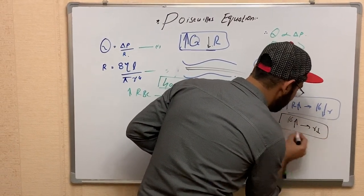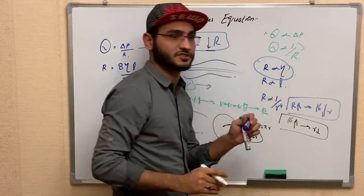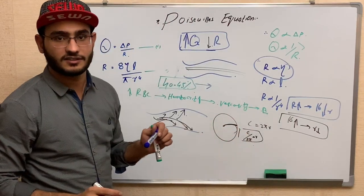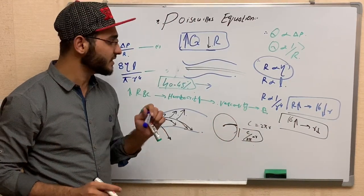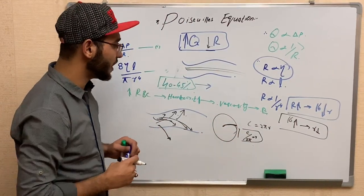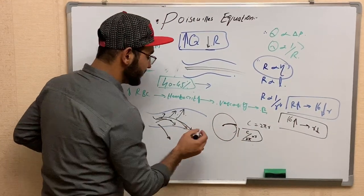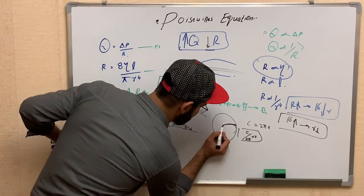This inverse proportional relationship between radius and resistance is a key component of the Poiseuille equation.